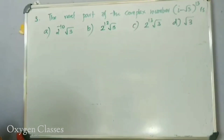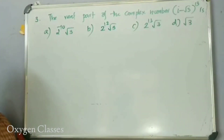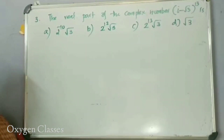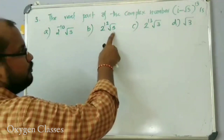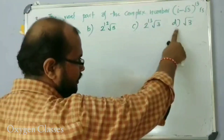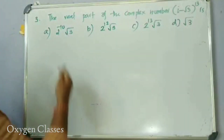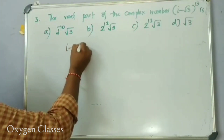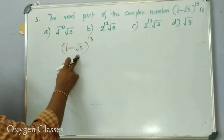The real part of the complex number (i minus root 3) all raised to the power 13. The options are: option A: 2 raise to minus 10 root 3, option B: 2 raise to 12 root 3, option C: 2 raise to 13 root 3, option D: root 3.